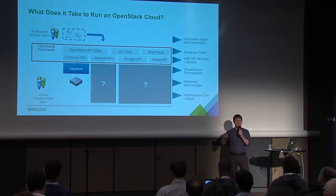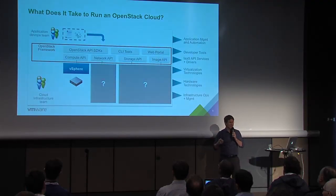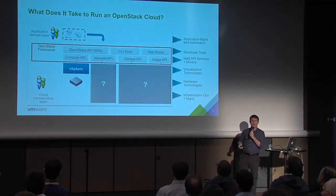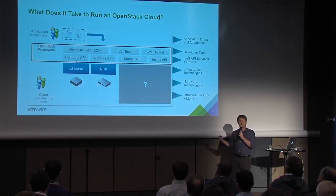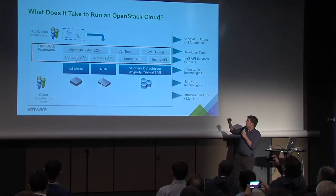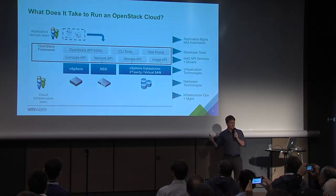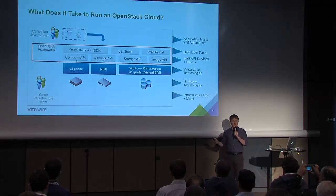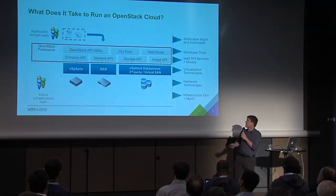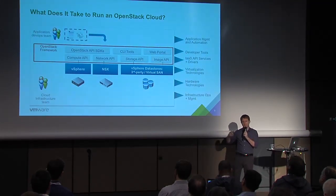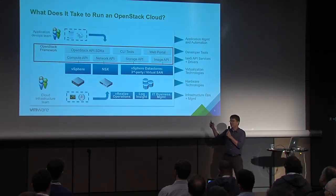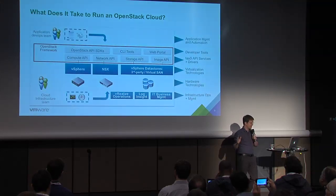VMware has technologies that fit across this entire stack. We've integrated vSphere Compute into Nova for the Compute API, integrated NSX for networking into the Neutron API, and done integrations with Cinder and Glance for storage and image APIs — so any storage that works with vSphere will automatically work with OpenStack and vSphere, with no changes required. No requirement from a vendor to have done a specific OpenStack Cinder driver. That also means VMware's Virtual SAN technology just works out of the box. On the infrastructure and operations side, we have tools like vRealize Operations, LogInsight, and IT Business Management.